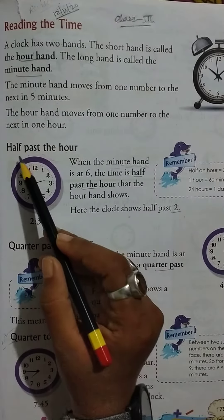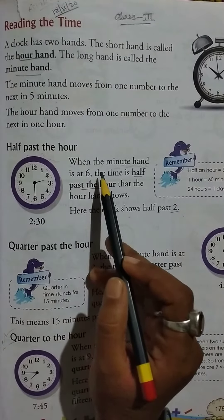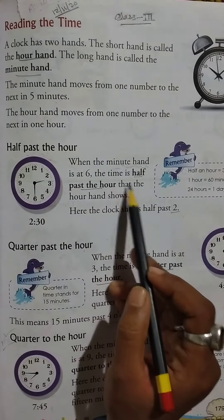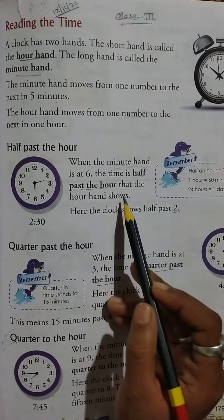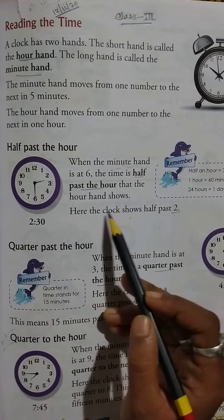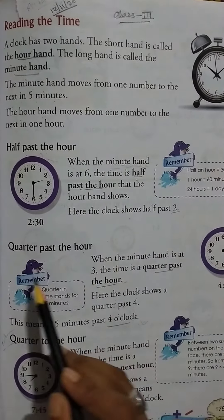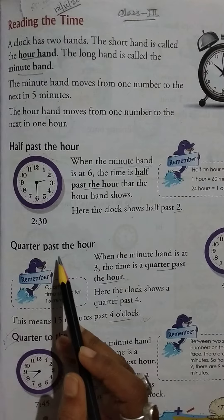Half past the hour: When the minute hand is at 6, the time is half past the hour that the hour hand shows. Here the clock shows half past 2. Then, quarter past the hour: